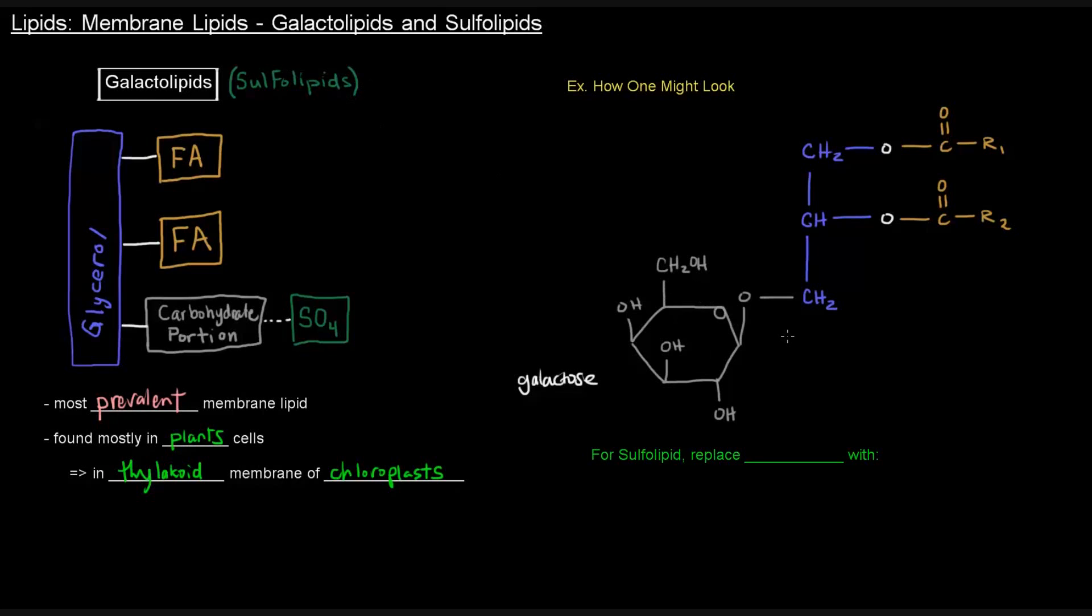So this is what a galactolipid might look like. And if you wanted a sulfolipid, you would just replace the CH2OH portion, which is this portion up here, with a sulfate group. So basically, instead of CH2OH, you'd have CH2SO3-. So that's how a sulfolipid would look and how a galactolipid would look.